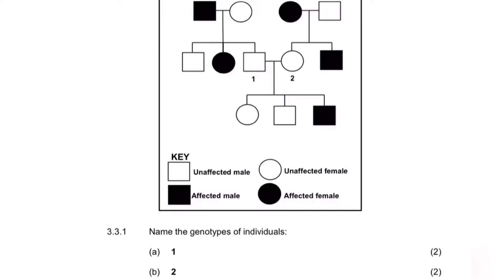Individual two is female and also unaffected, so females have genotype XX. Because she's unaffected, the first allele is capital A. However, the second allele is not capital A. The reason is that her mother is affected, and for her mother to be affected, the mother must have two recessive alleles. Since a person receives one allele from their mother and one from their father, the second allele individual two carries must be small a — giving her genotype X^A X^a.